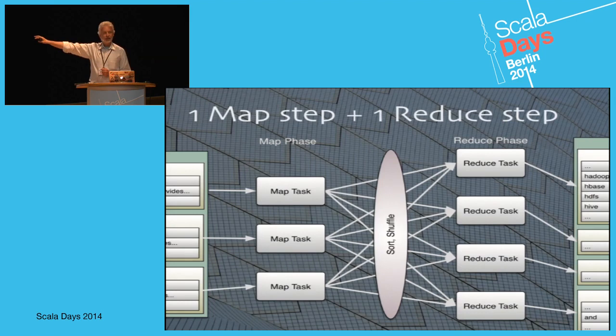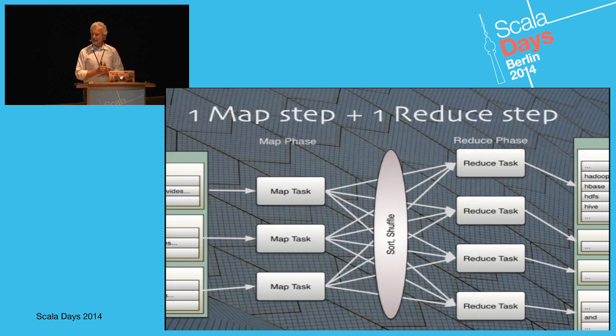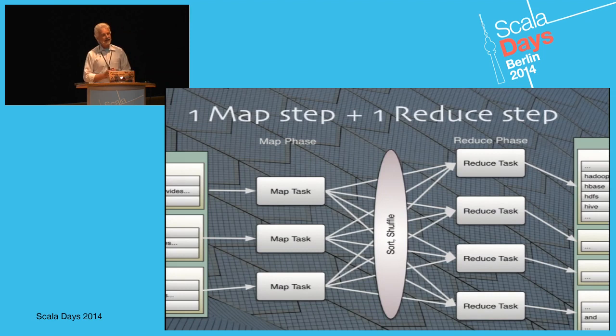A JVM process called a map task is started for each block of the files being processed — not each file, but each block. It does preliminary processing, maybe throwing away data or restructuring it. For example, reading each line of text and splitting it into words — which for functional purists is actually a flatMap, not a map, since you're going from one line to many words.